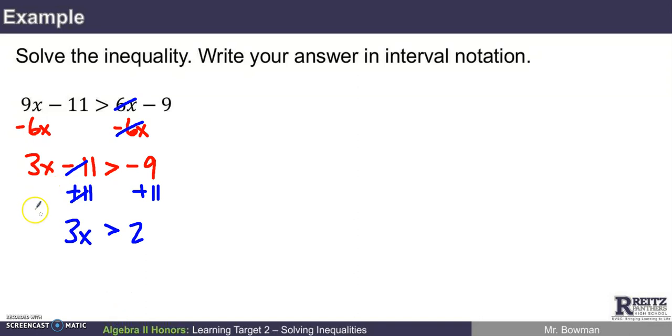And now I can use that division property of inequality, and if I need to isolate x, I'll divide both sides by 3. Since 3 is a positive number, I will maintain the inequality. I will still have a greater than situation and I've got 2 thirds. And that's my answer, but that's not the answer in interval notation.